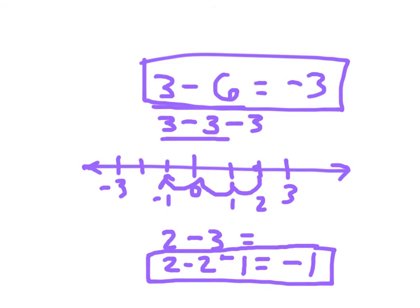Now in some instances, you won't cross 0. For instance, a normal type problem like 9 minus 2 — that's obviously 7. And in some instances you might be subtracting from a negative number; still the same approach. Let's take a look on the next screen.